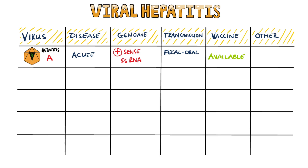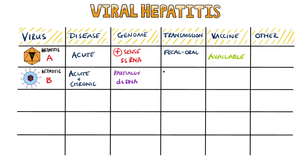A vaccine is available for hepatitis A. Hepatitis B can cause both acute and chronic hepatitis. It is a partially double-stranded DNA virus that is spread through blood and other bodily fluids, including semen and vaginal fluid.